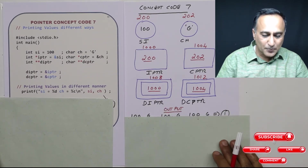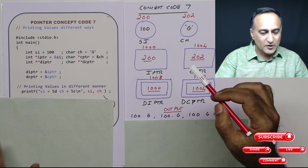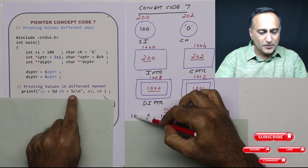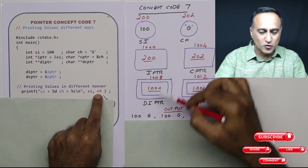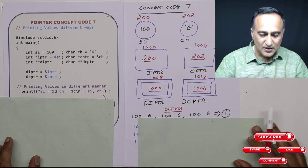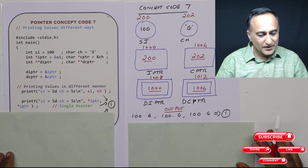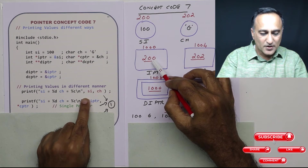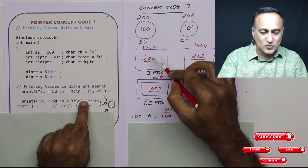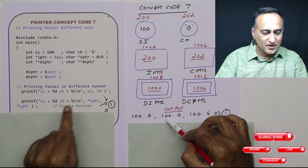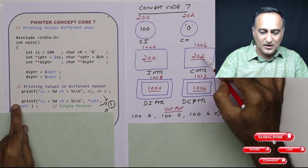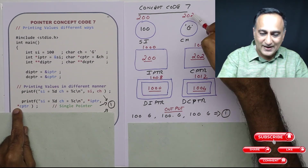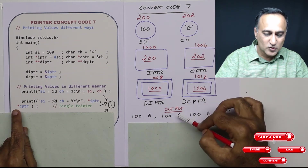I am simply trying to print percentage d si, so it is going to print 100. I am trying to print percentage c ch, it is going to print G. Then I am trying to print IPTR — IPTR is 200. Star IPTR, the value at address 200, happens to be 100, so it is printing 100. If I just print CPTR, it will print 202. Star CPTR, the content at 202, happens to be G, so I am getting G.